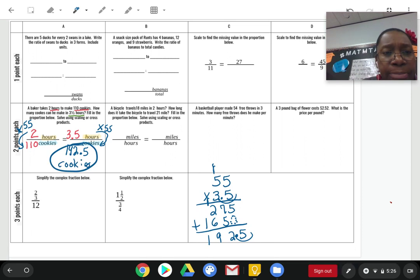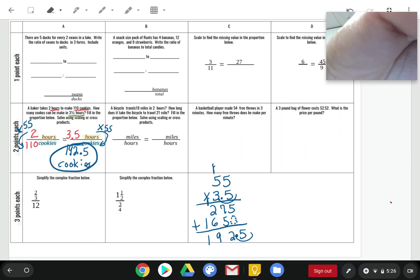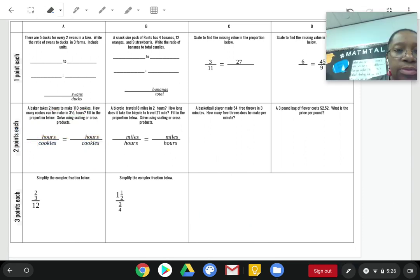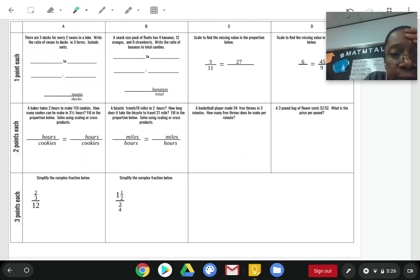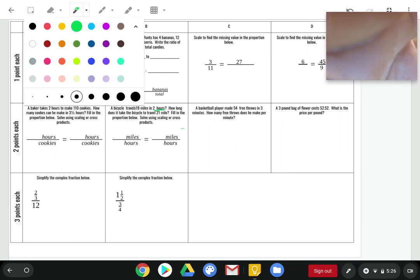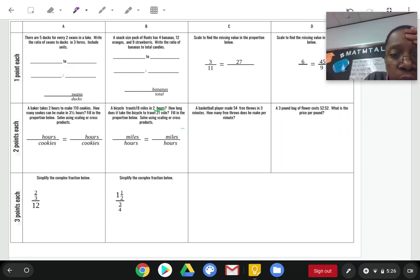Let's look at the next one. And, guys, I'm going to go ahead and clear the page. My page is kind of messy. So, I'm just going to clear my page here. The next problem says that a bicycle travels 18 miles in 2 hours. How long will it take the bicycle to travel 21 miles? Fill in the proportion below. Remember, a proportion is just where you have a fraction equal to another fraction. And then, we have to solve using scaling or cross products.